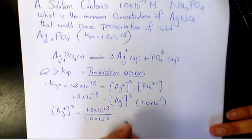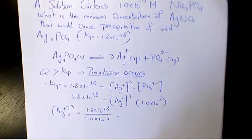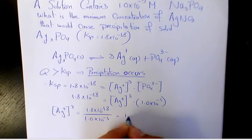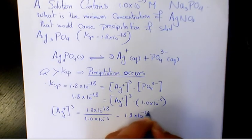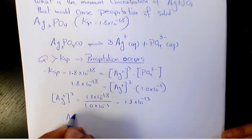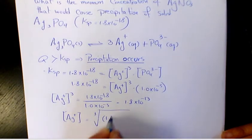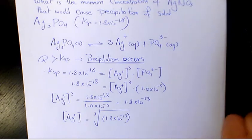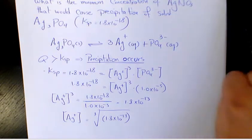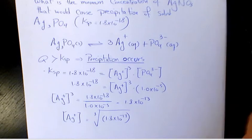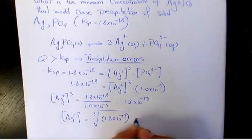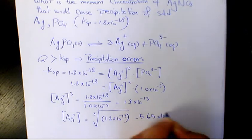So that's gonna make it 1.8 times 10 to the power of negative 13. So [Ag+] is gonna be the cube root of 1.8 times 10 to the power of negative 13, which is going to be 5.65 times 10 to the power of negative 5 mole per liter.